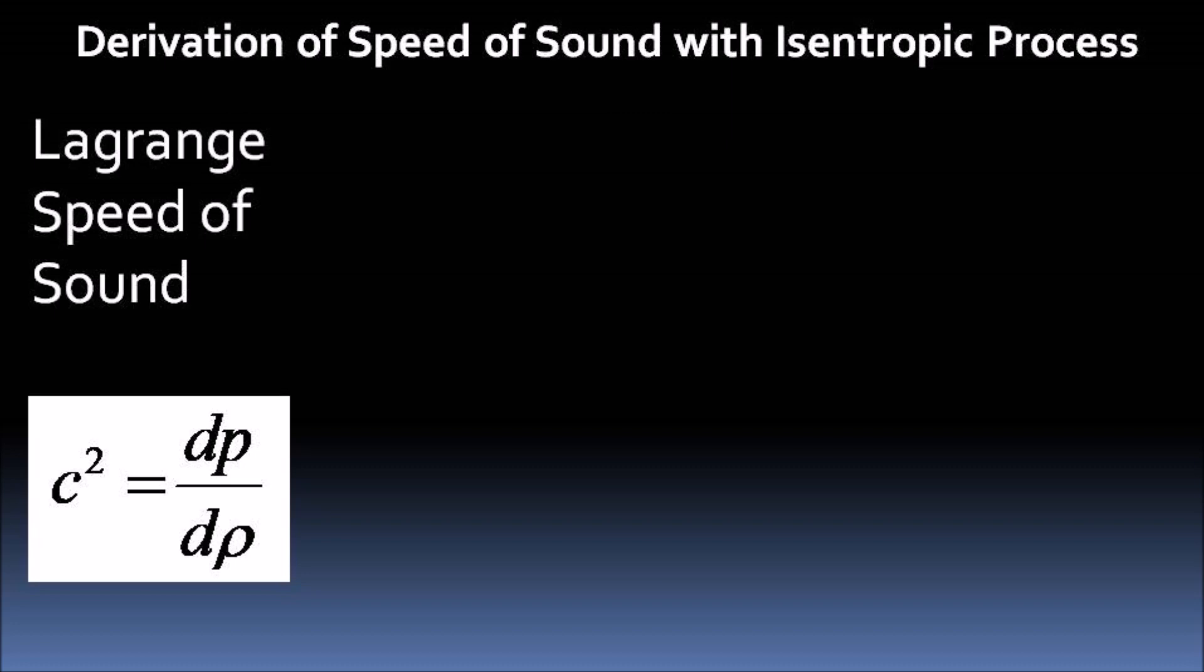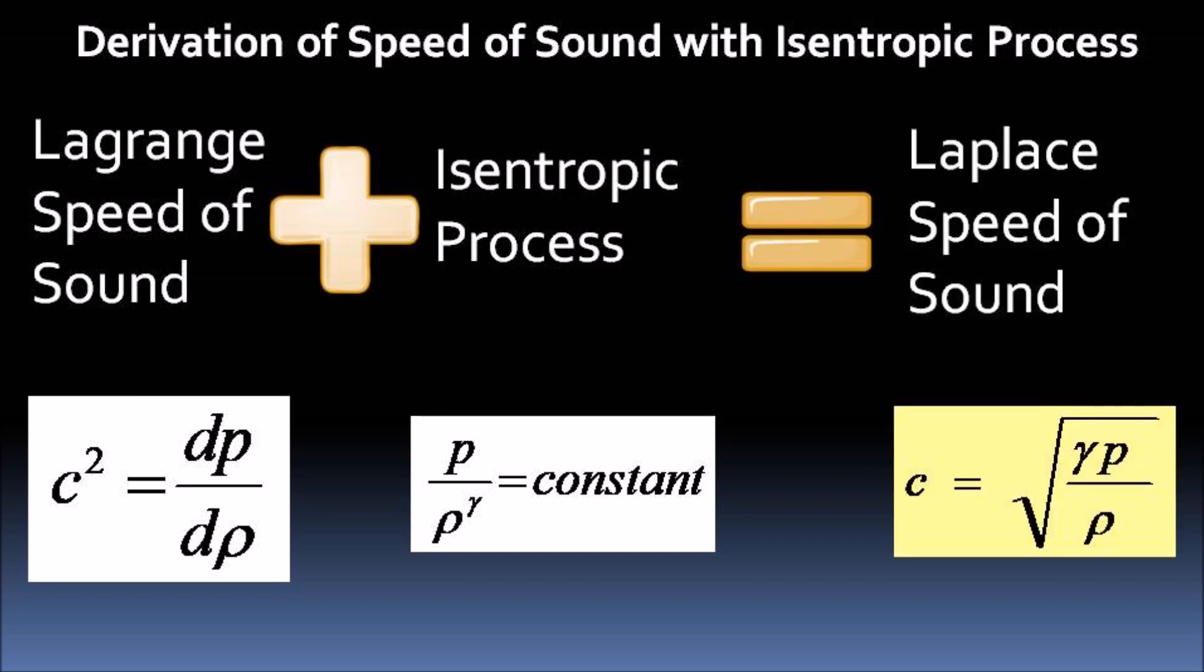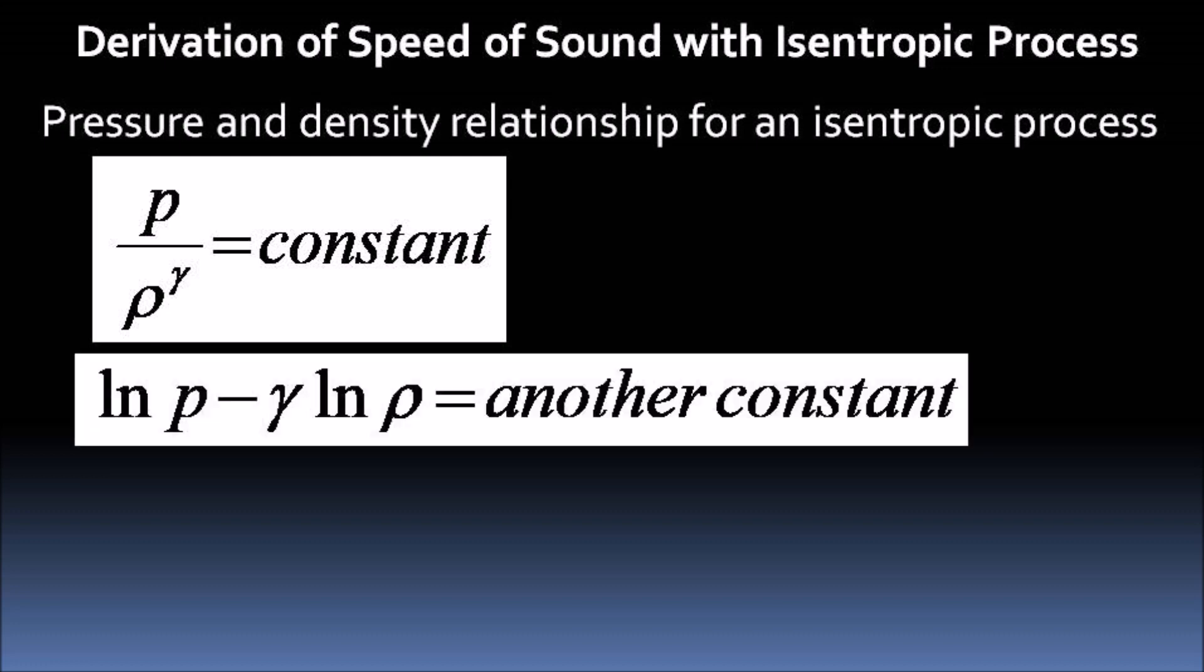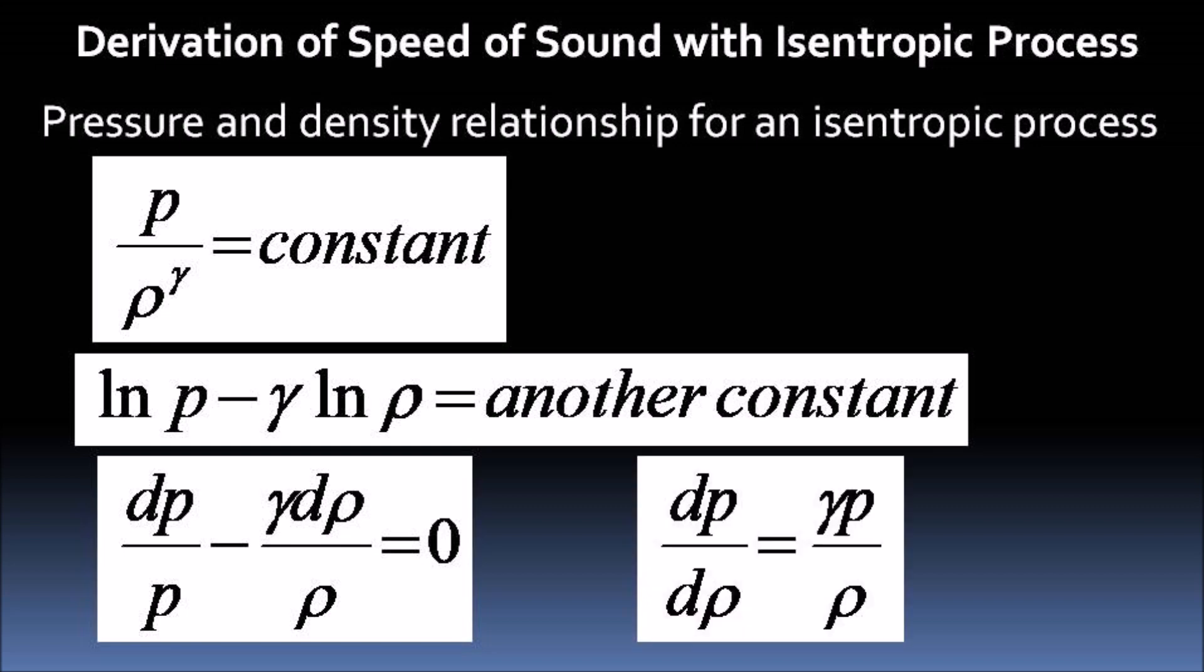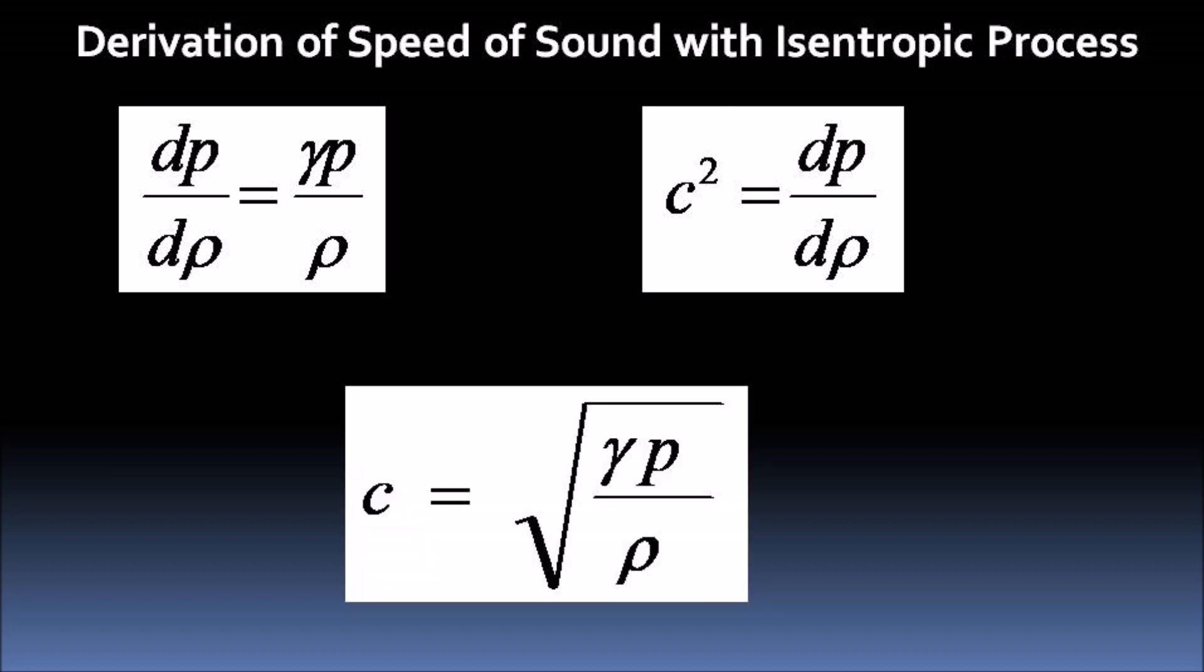Lagrange's derivation of speed of sound when used with isentropic assumption, one gets Laplace formula for speed of sound. Now let us see how the derivation goes on. We use the pressure and density relationship for an isentropic process. Take natural log of both the sides and differentiate which results in dp by d rho is equal to gamma p by rho. Now we just put the value of dp by d rho in Lagrange's equation of speed of sound. And it just results in the Laplace equation of speed of sound though with a completely different theory.